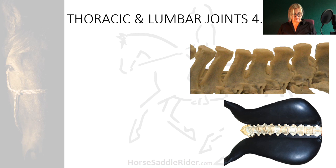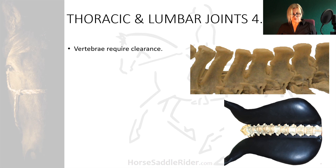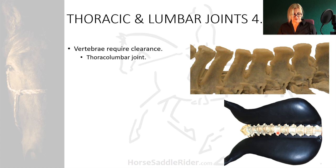Thoracic vertebrae up to the thoracolumbar joint require clearance from the saddle gullet channel in order to be capable of functioning. The back of the saddle panels should not interfere with the thoracolumbar joint — if the back of the saddle moves in this region, the muscles of the thoracolumbar region will seek to stabilise it and can become hypertonic and overdeveloped.